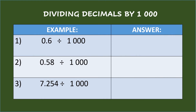Dividing decimals by one thousand. First example: six-tenths divided by one thousand. The divisor has three zeros, so move the decimal point of the dividend three places to the left and add zeros to fill in the vacant places.